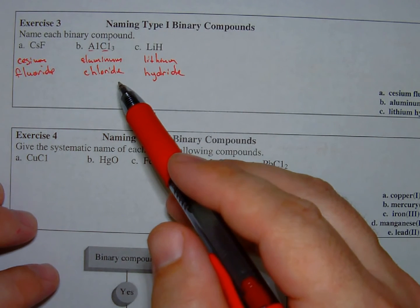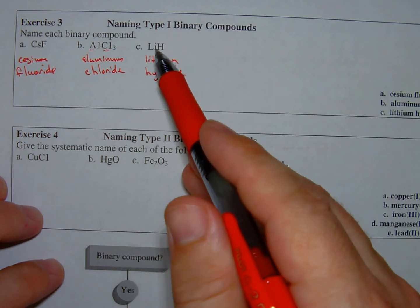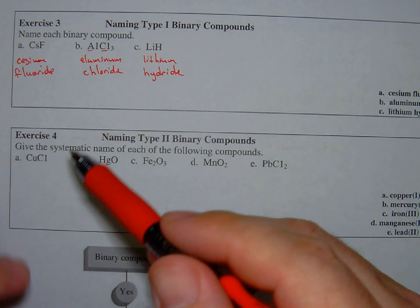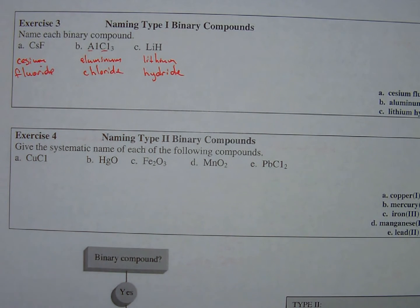Nor do I have to use a roman numeral because representative elements only form one valence state. They don't vary like the transition metals.